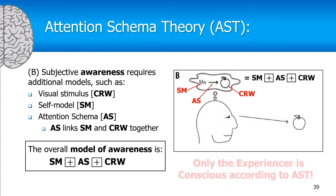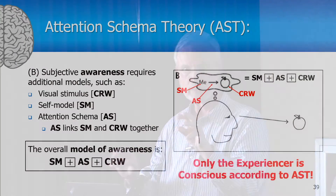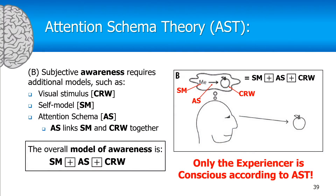Attention schema theory implies that only the experiencer is conscious. If you imagine placing the thinker, the doer, and the experiencer into three separate brains, it's only the brain containing the experiencer that has the attention schema and the representation of the world — the thinker and doer don't have that. So only the experiencer is conscious on its own. When I talk about thinker consciousness or doer consciousness, it's the thinker combined with the experiencer, or the doer combined with the experiencer, that produces those forms of consciousness. The only agent that's conscious all by itself is the experiencer.